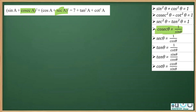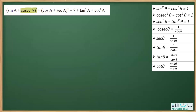Instead, we are going to apply the (a + b)² identity. The reason is that if we expand using (a + b)², we will get cosec²a, which can be written as 1 + cot²a, and similarly sec²a can be written as 1 + tan²a by applying these identities. So let's begin with writing the LHS.